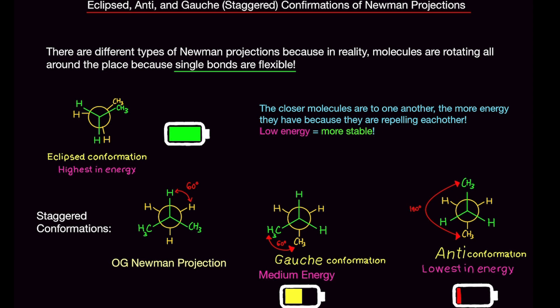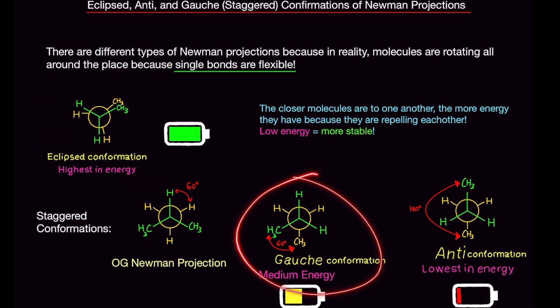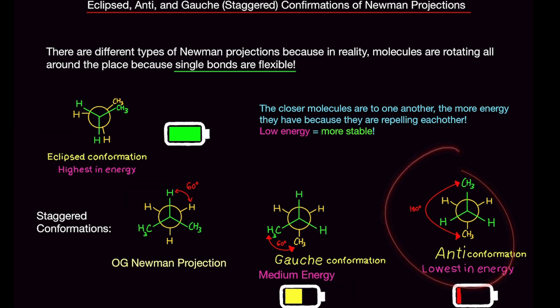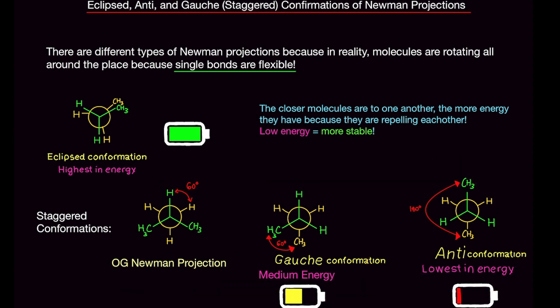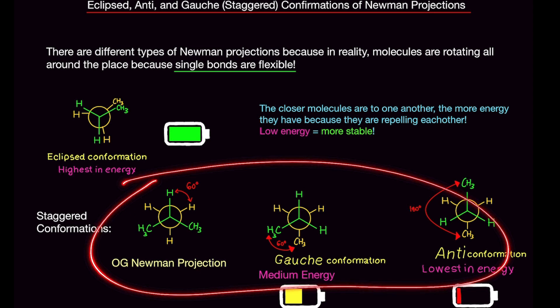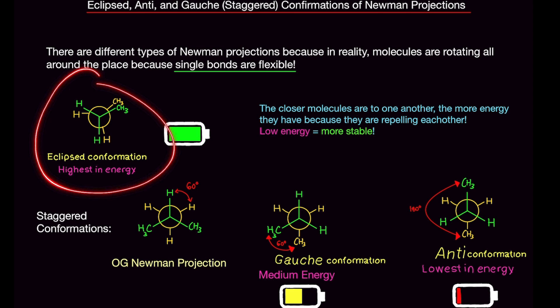So there are different types of Newman projections. There are eclipsed, there are gauche, and there are anti. Now eclipsed is its own category. Gauche, anti, and our normal Newman projections fall under the staggered conformation. So staggered conformation is basically like an umbrella term to describe those three, and eclipsed conformation is its own category.